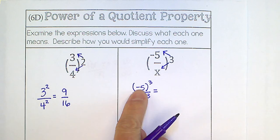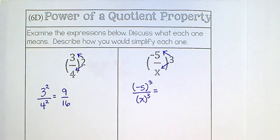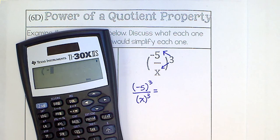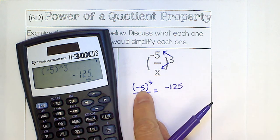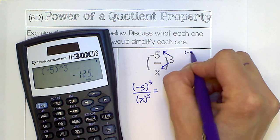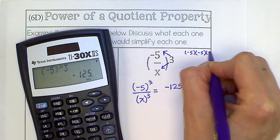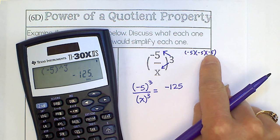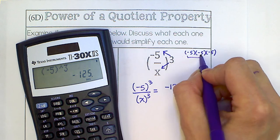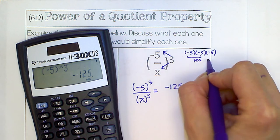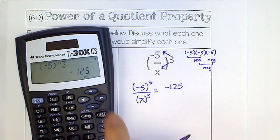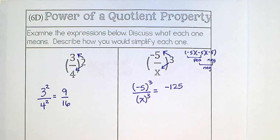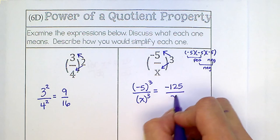Now be careful. Negative 5 to the 3rd. If you use parentheses like you should, you are going to get a negative 125, because this is negative 5. That's like saying negative 5 times negative 5 times negative 5. And when you have an odd amount of negatives, so this would make a positive, and then a positive times another negative, your final answer is negative. So be very careful and make sure you use parentheses if they're there. So we get negative 125 over x to the 3rd, and that is the final answer.